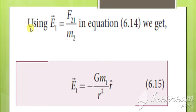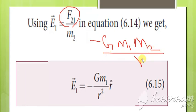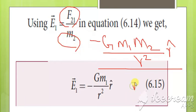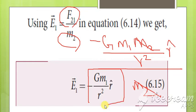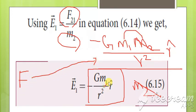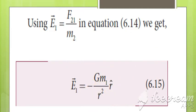Writing the formula: E = F₂₁ / M2. Substituting F₂₁ = −G·M1·M2 / R² · R̂, the M2 in numerator and denominator cancel. So E = −G·M1 / R² · R̂. The difference between F and E is that the F formula has two masses M1 and M2, whereas the E formula has only one mass M1.